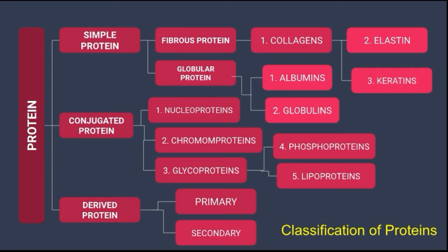According to chemical composition, proteins have been divided into three types. The first is simple protein, the second is conjugated protein, and the third is derived protein. Simple proteins are classified on the basis of coagulation and solubility into two subtypes: fibrous protein and globular protein.